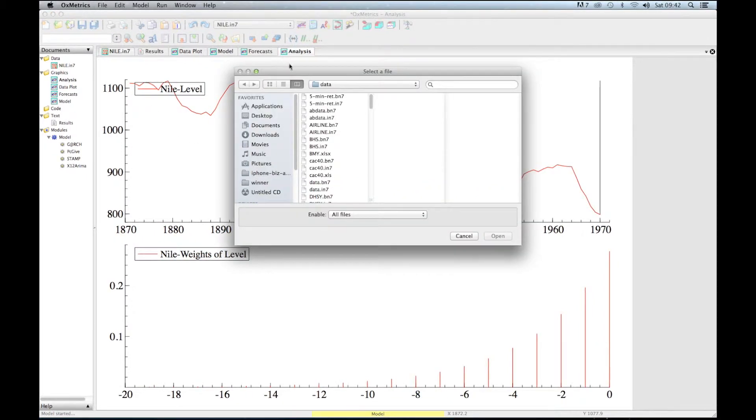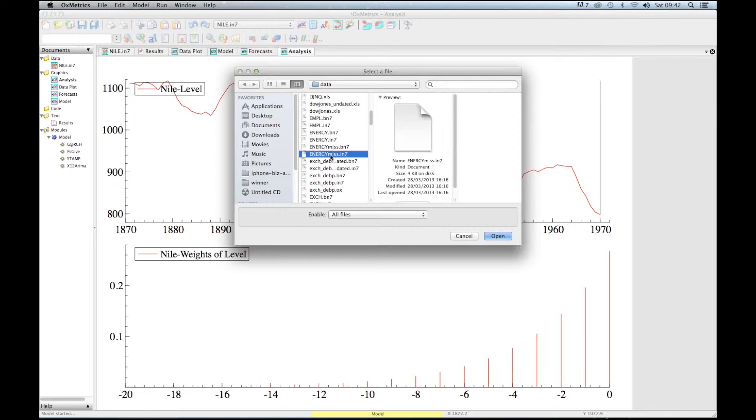We are back in the select a file menu and we select another time series for another illustration. In this case, I'm presenting an illustration where we have some missing data, so I select Energy Miss.